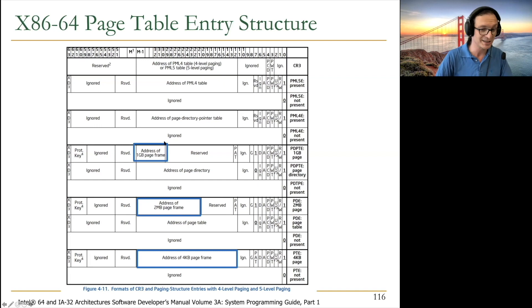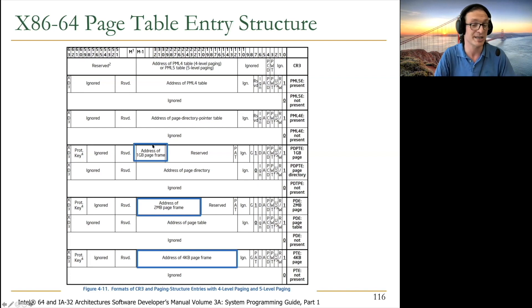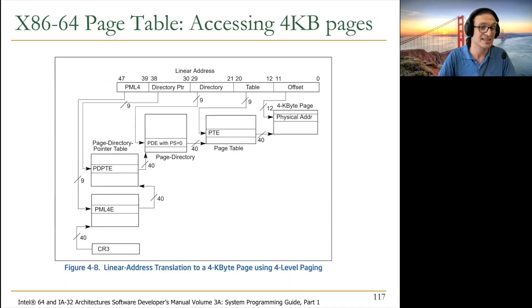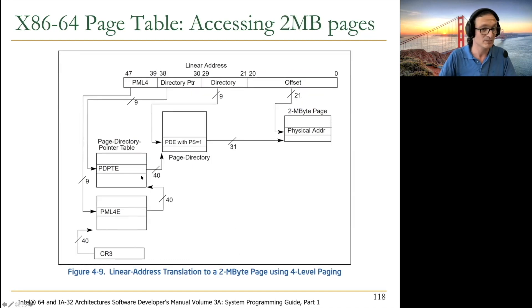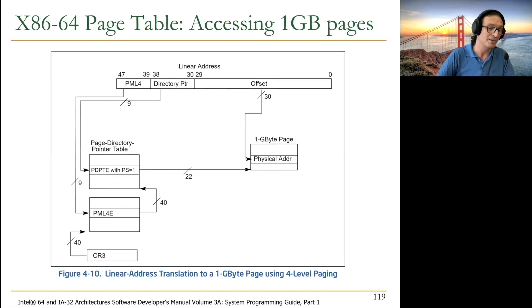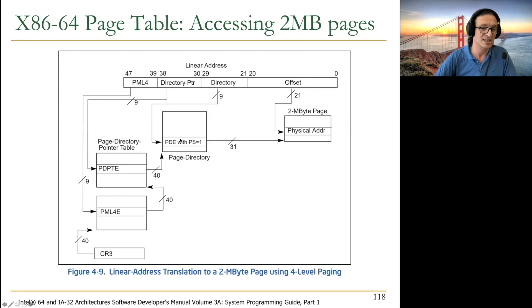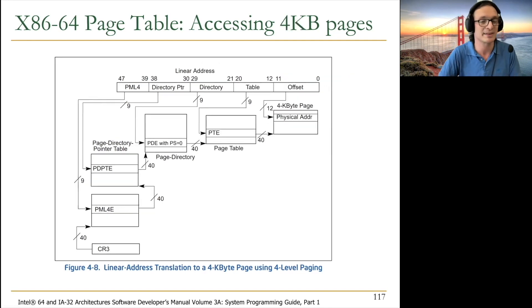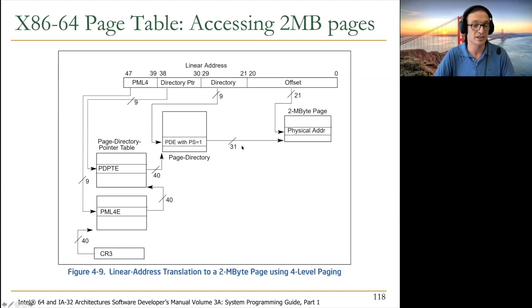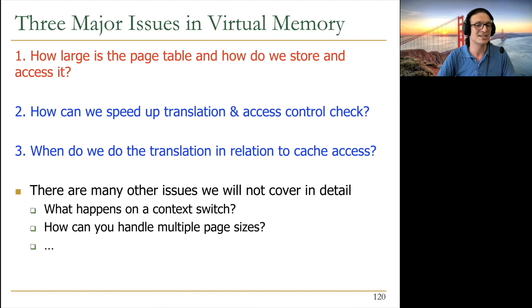Choosing which page size to use is not easy — it depends on your locality characteristics in translation. For four-level paging: one-gigabyte pages actually use only two levels, two-megabyte pages use three levels, and four-kilobyte pages use the full four levels. The name 'four-level paging' refers to the maximum levels needed with the smallest page size.